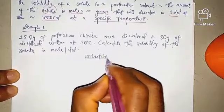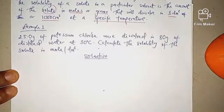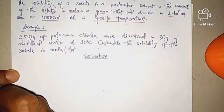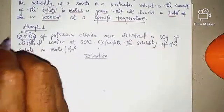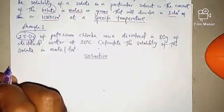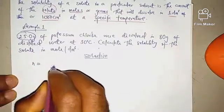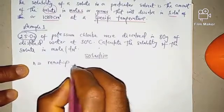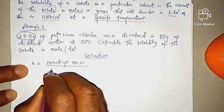The question can also say calculate the solubility in grams per dm³, but this one is asking us to calculate the solubility in moles per dm³. So what we need to do first is convert 25 grams into its equivalent in moles. To get the number of moles, we know that it is: moles = reactive mass over molar mass.